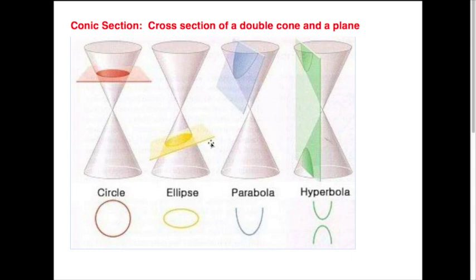In this lesson we're going to talk about something called a conic section. A conic section is the cross-section of a double cone and a plane. These are the four that we study: the circle, the ellipse, the parabola, and the hyperbola.